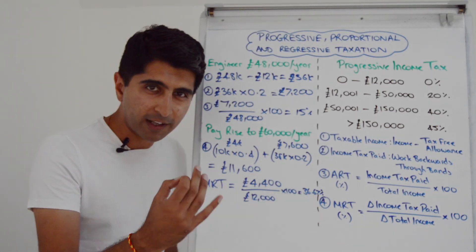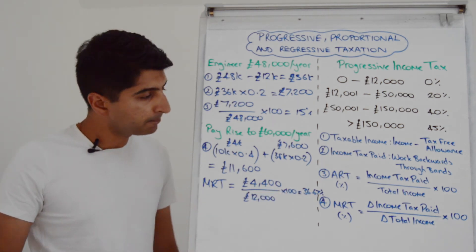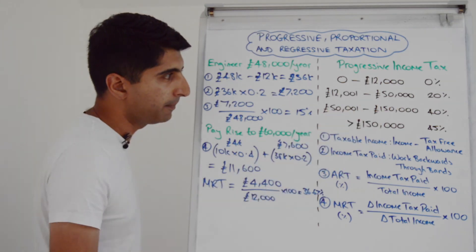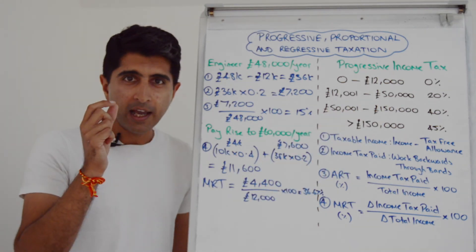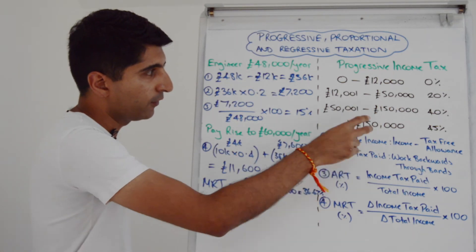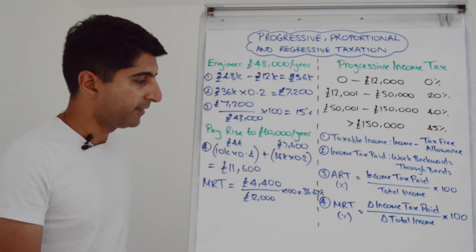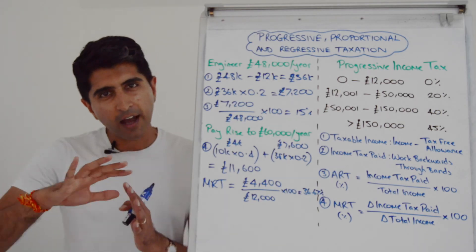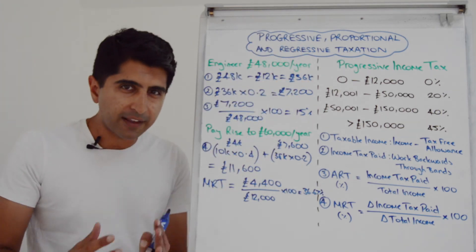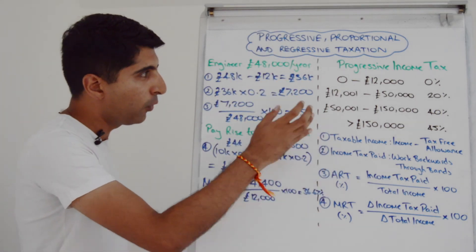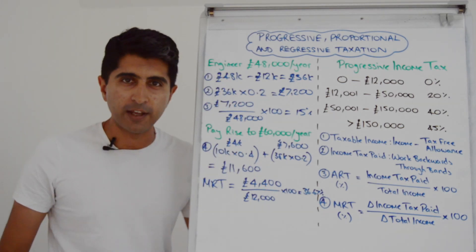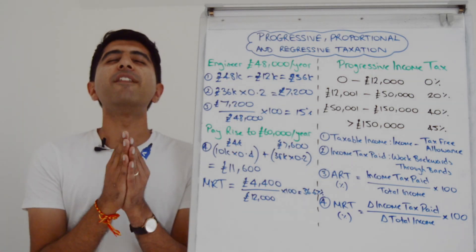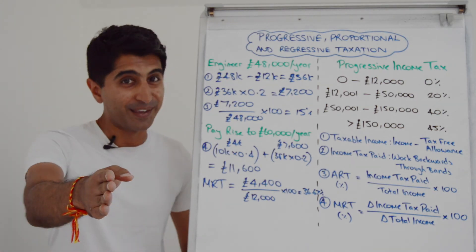That rate makes sense — it's not exactly 40% because not all of the additional £12,000 is taxed at 40%. Only £10,000 is taxed at 40%; the remaining £2,000 is taxed at 20%, which is why the figure is close to 40 but not exactly 40. That covers all these different types of taxes, as well as going into more depth with progressive taxation and key calculations. Thank you so much for watching — I'll see you in the next video as we dive into fiscal policy.